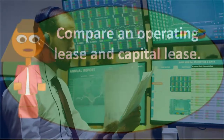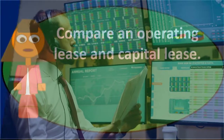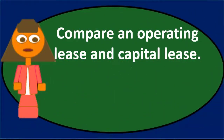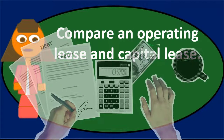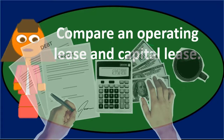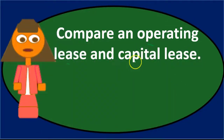A capital lease is essentially treated like a purchase, whereas an operating lease is treated normally — just like leasing an apartment or office building where we write off the expense. For a normal operating lease, every time we make a payment we credit cash and debit lease expense or rent expense. For a capital lease, we have to treat it as a purchase.